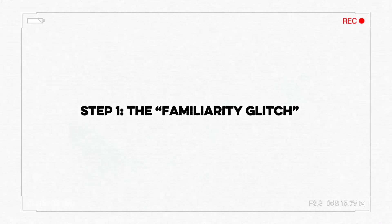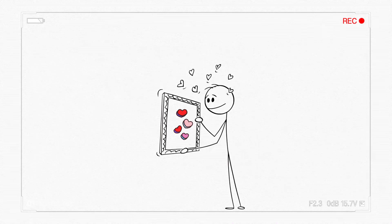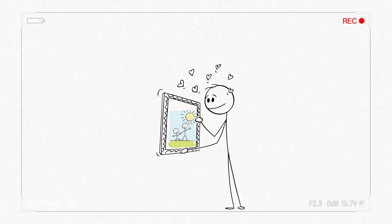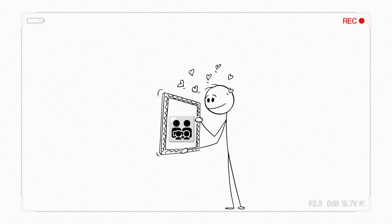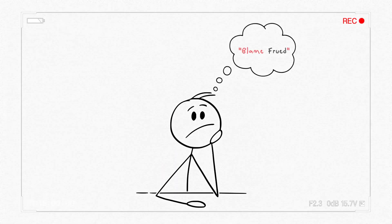Step 1. The familiarity glitch. Your brain loves what it already knows. That's why you might crush on someone who looks like a celebrity you like, reminds you of a childhood friend, or even resembles your parent. Yeah, it's weird. Blame Freud.